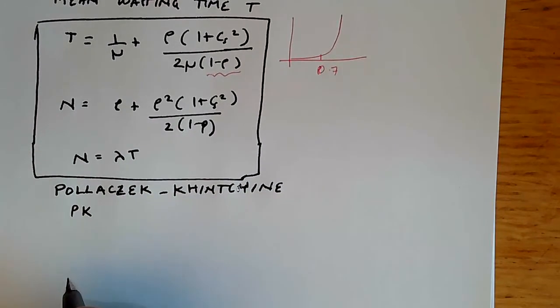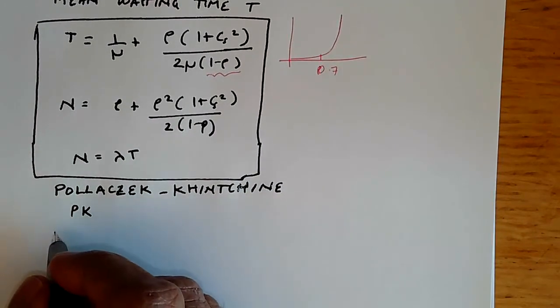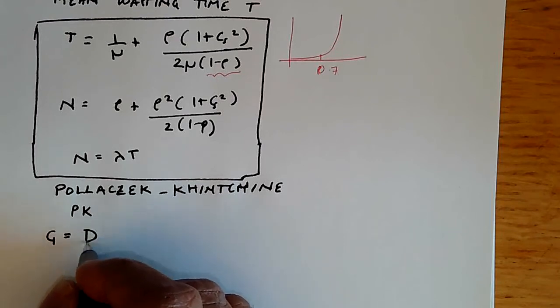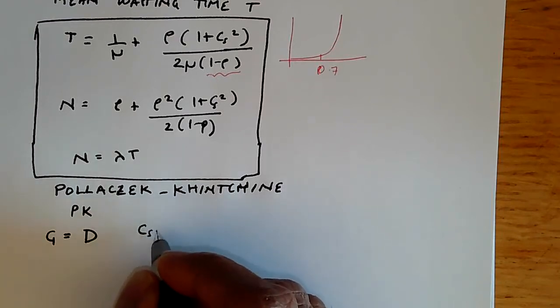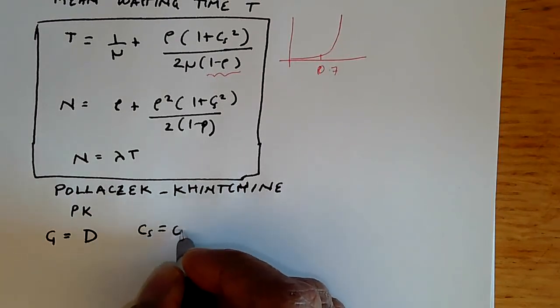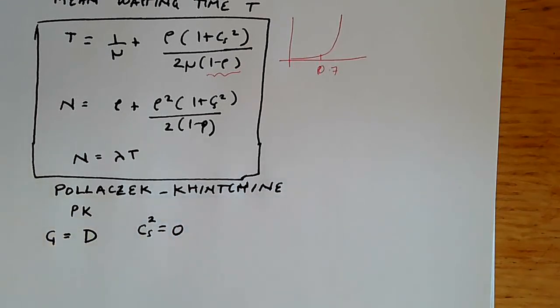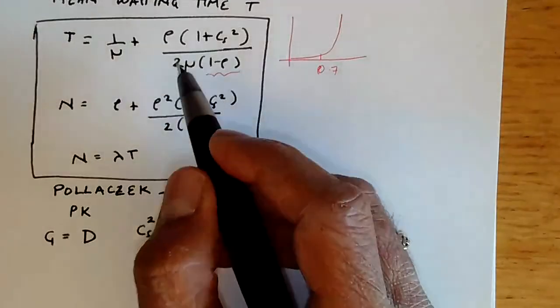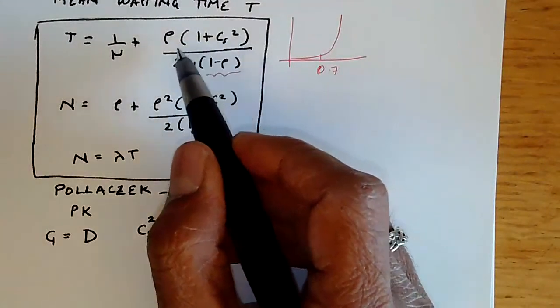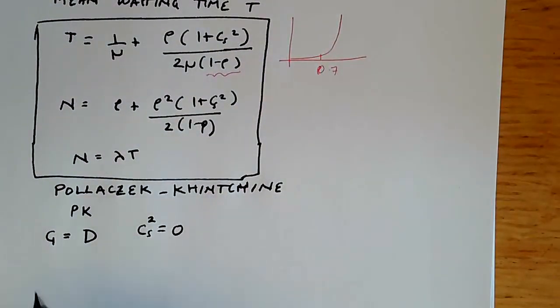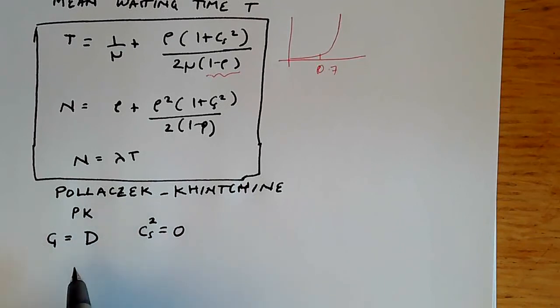There are four cases of interest. For deterministic departure processes, when the general departure function equals D for deterministic, then C_S squared equals zero because we have no variability in the departure process at all. This value goes to zero and we get simpler results for the deterministic case.